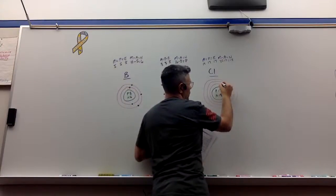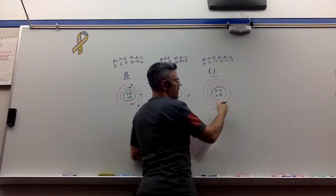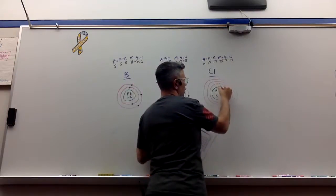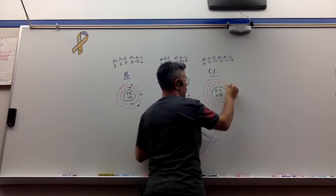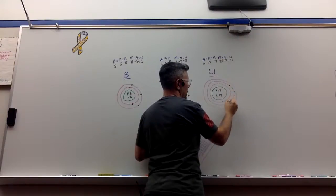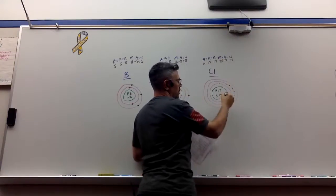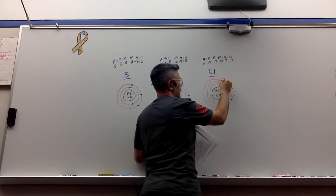So here's what I know. I already know that there's 10 in the first two, right? So we got one, two, and then three, four, five, six, seven, eight, nine, ten. So I just need to do seven more in the valence shell.